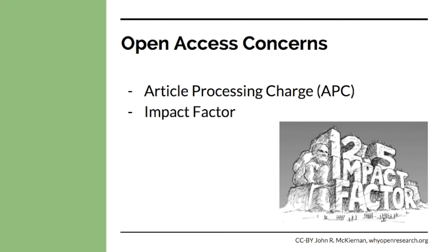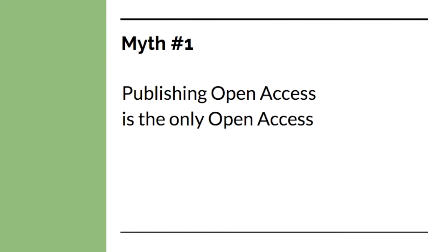The other primary concern is with impact factor. Many tenure-track researchers or students like yourselves that want to gain a tenure-track position fear that they will not gain a promotion or job if they aren't publishing in high impact factor journals. If this is a concern for you, you can still participate as an open researcher. If you're concerned that an open access journal does not have an impact factor, it is likely simply because it is a new journal and impact factor takes years to count. Let's go over a few open access myths that may help you with these concerns.